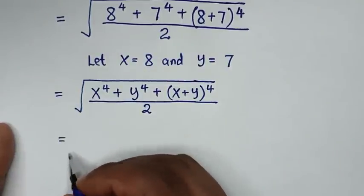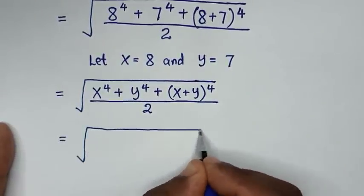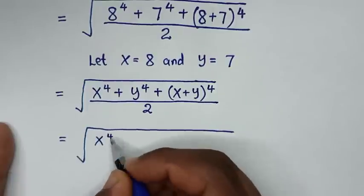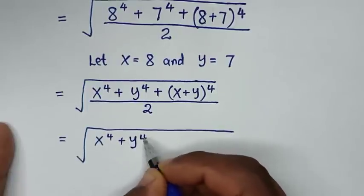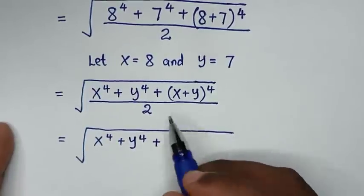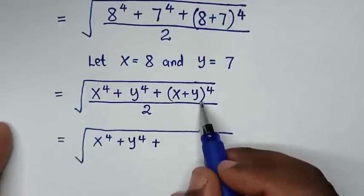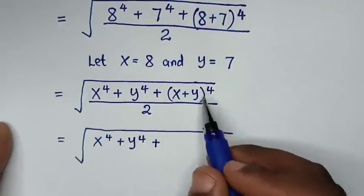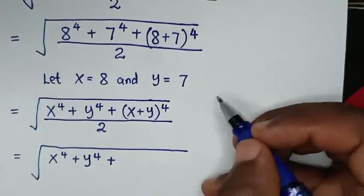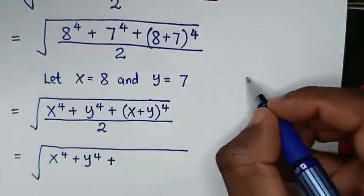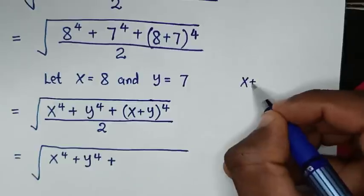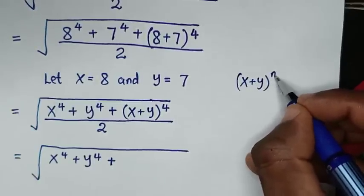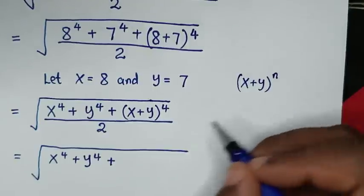In the next step it will be equal to the square root of x⁴ plus y⁴, plus the expansion of (x+y) to the power of 4. To expand this, we will use the binomial theorem, which is in the form of (x+y) to the power of n, where n here is 4.